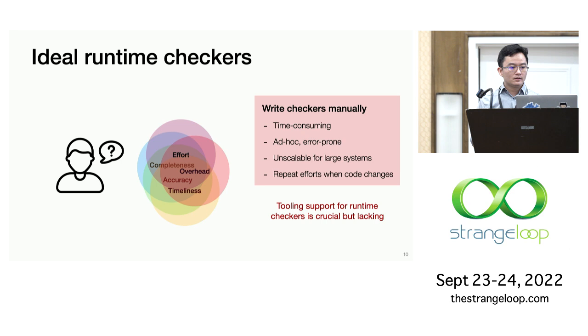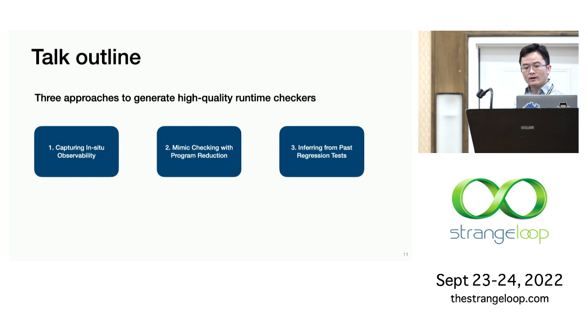In this talk, I will present three solutions that aim to generate runtime checkers. These solutions divide the problem of gray failure into three subcategories and then attack them one by one.